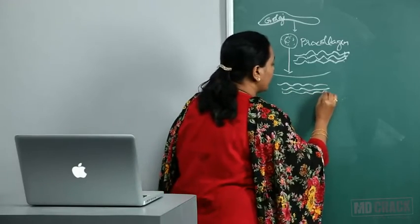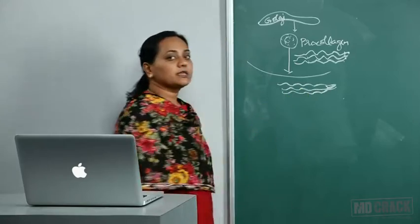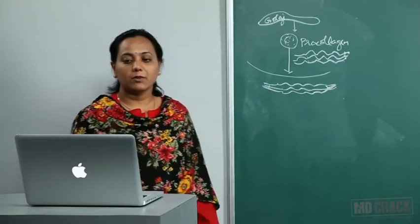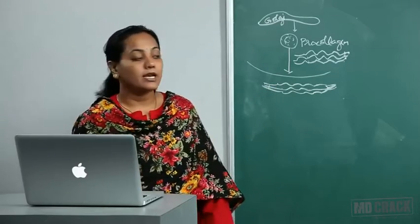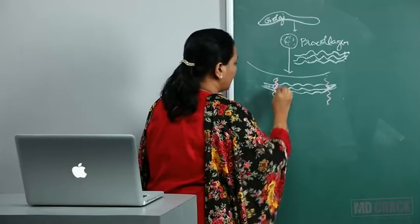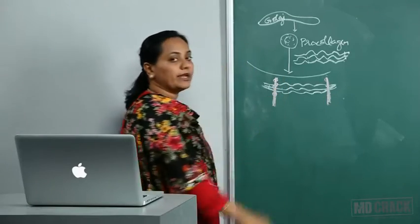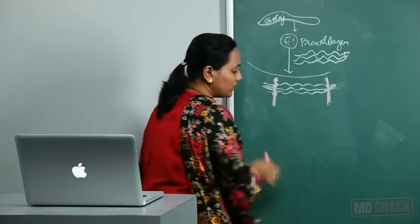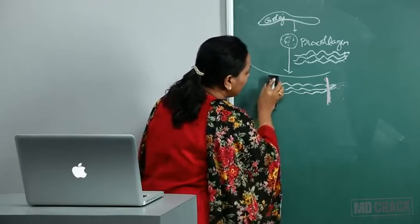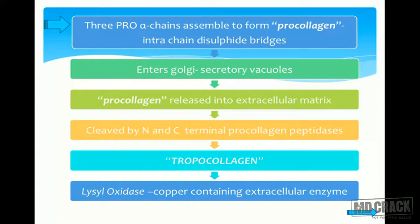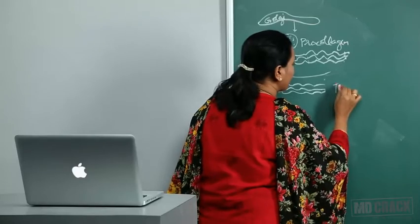In the extracellular matrix, the pro-collagen is still linked by disulfide bridges at both the N-terminal and C-terminal ends. The pro-collagen molecule is then acted upon by certain peptidases that cleave off both ends where the disulfide bonds are present. What remains is tropocollagen. It is still not collagen — it must still form a quarter-staggered structure to become a collagen fiber.